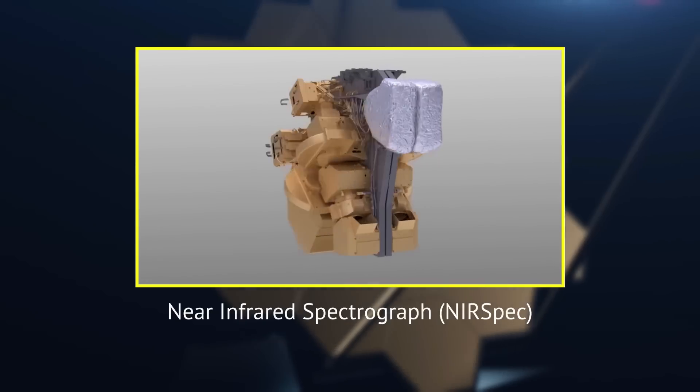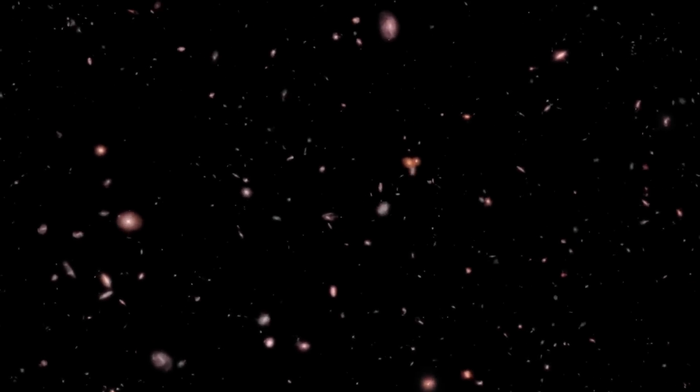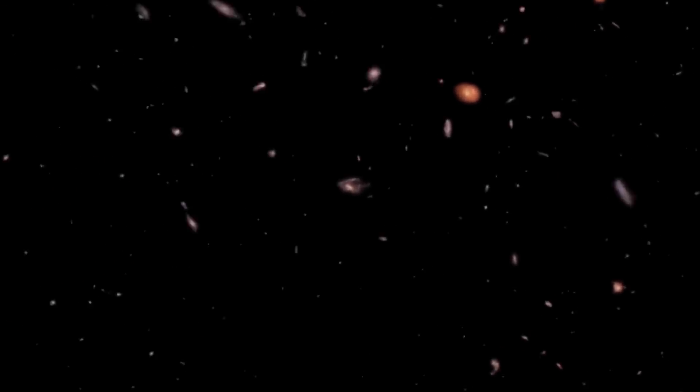scientists in the Cosmic Evolution Early Release Science Survey, or CEERS, used JWST's NIRCam instrument to peer back to a time just after the Cosmic Dark Ages to study the structure of galaxies in the very early universe.